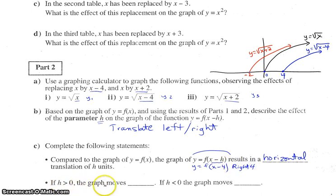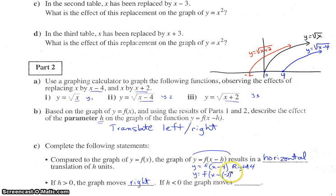If h is greater than zero, the graph moves right. It doesn't matter that the sign in the equation is negative, because that's part of the original. Now if h is less than zero — say negative two — that would simplify into x minus negative, so x plus two, which we know from above moves it left two. So if h is less than zero, the graph moves left h units.